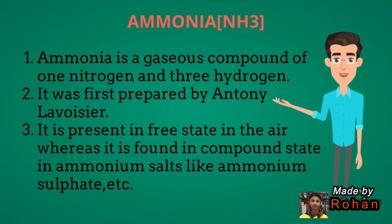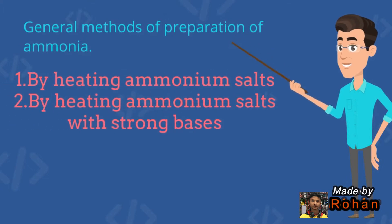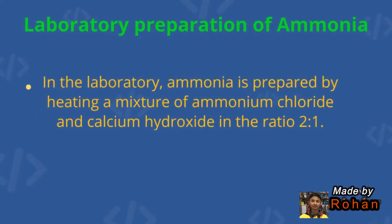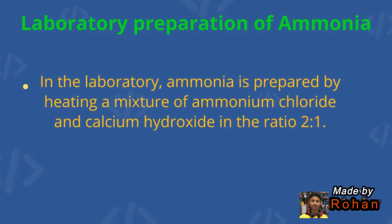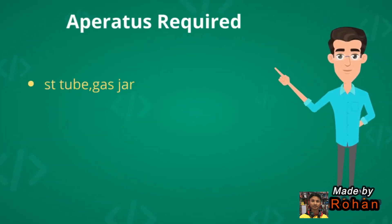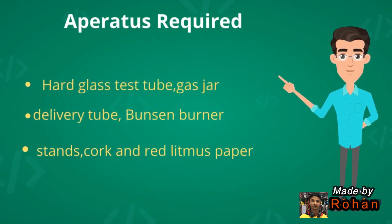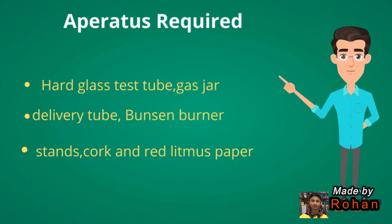General methods of preparation of ammonia: one, by heating ammonium salts; two, by heating ammonium salts with strong bases. Laboratory preparation of ammonia: in the laboratory, ammonia is prepared by heating a mixture of ammonium chloride and calcium hydroxide in the ratio 2:1.